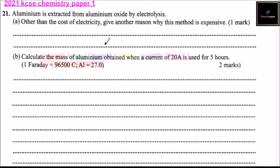Other than electricity, this method is expensive because the oxygen reacts with the carbon of the positive electrodes, forming carbon dioxide. So they gradually burn away and need to be replaced frequently. To answer that, you can say the graphite anode needs to be replaced periodically or occasionally.